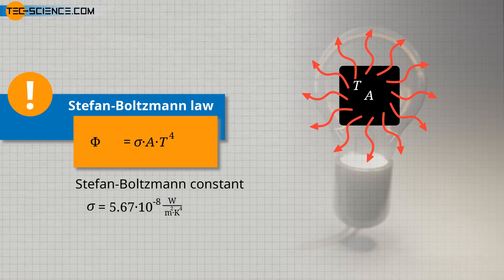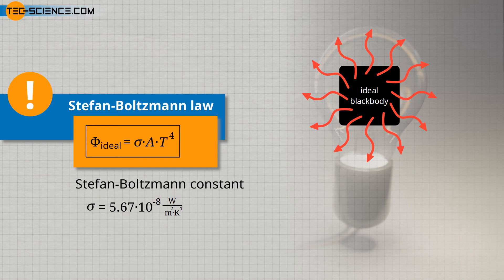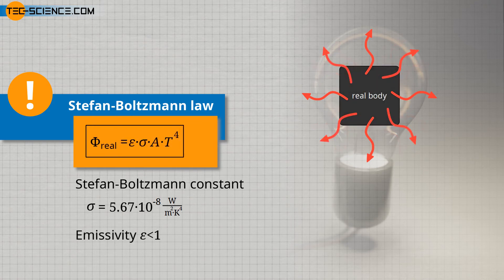However, this formula is only valid for an ideal blackbody, which absorbs all radiation. Why a blackbody is not only a perfect absorber of radiation but also a perfect emitter, we will explain in more detail later. For real objects, which are not ideal blackbodies, the radiant power is lower. This is taken into account with a unitless factor, the so-called emissivity epsilon. The emissivity indicates how high the radiant power of the real object is compared to an ideal blackbody. Many non-metallic objects have an emissivity above 0.9 and thus radiate with more than 90% of the power of a blackbody. These objects can therefore be considered, to a very good approximation, as blackbodies with respect to their emitted radiation.